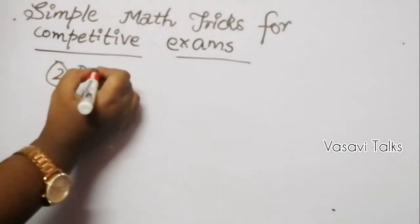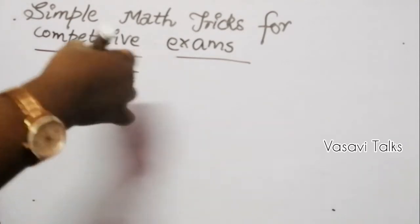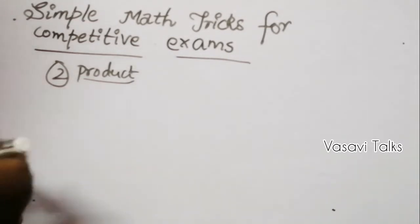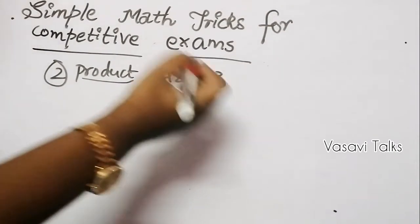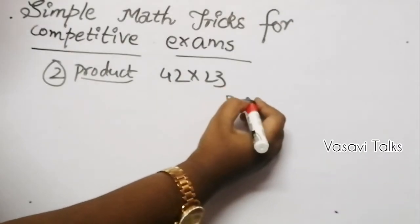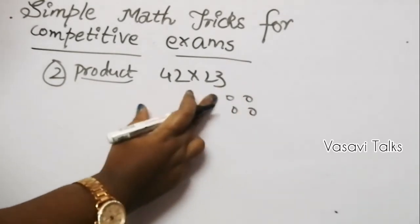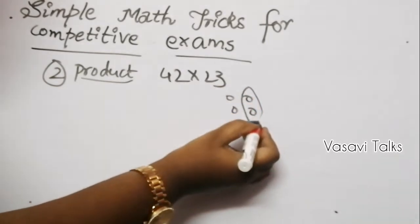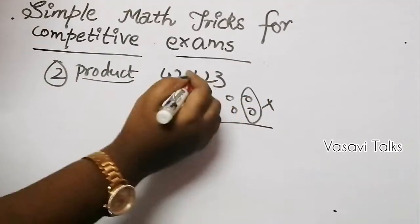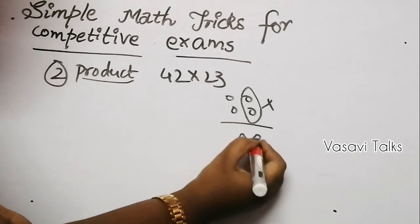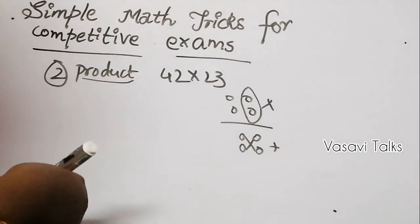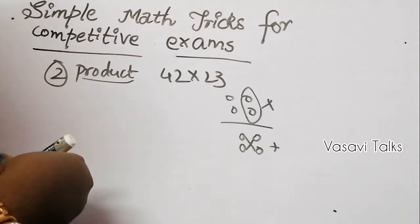Trick number 2: the product of two distinct numbers. We are going to show how to find the product of two different 2-digit numbers using a simple cross-multiplication method. First, multiply the units digits; then do cross multiplication and add; then multiply the tens digits.